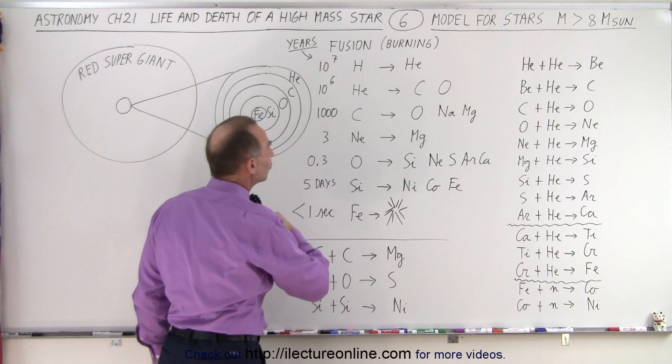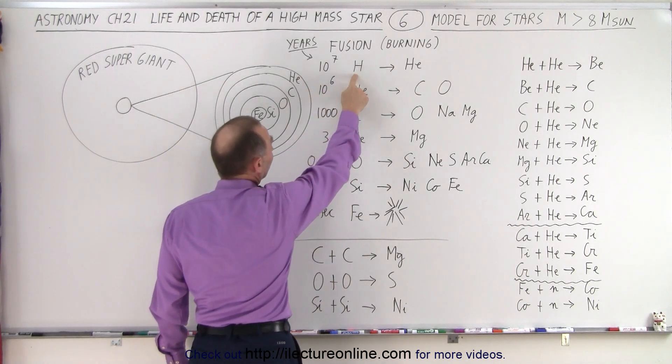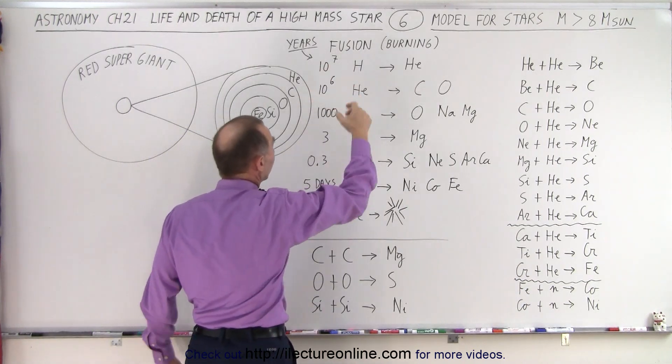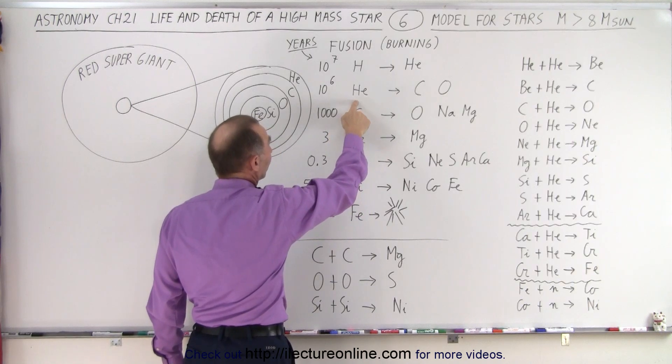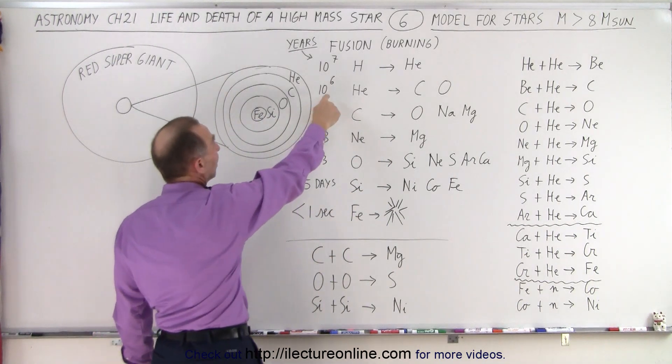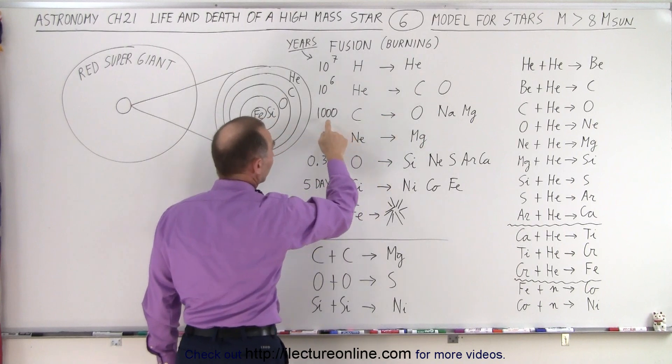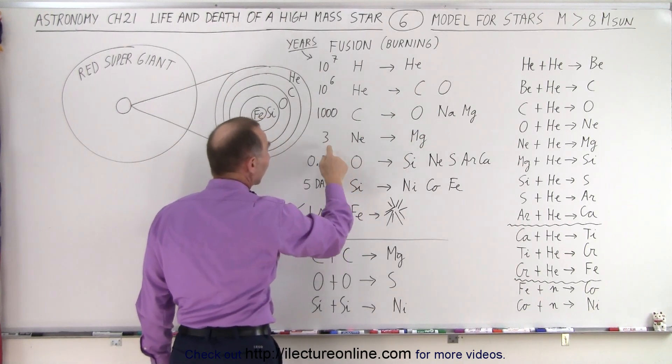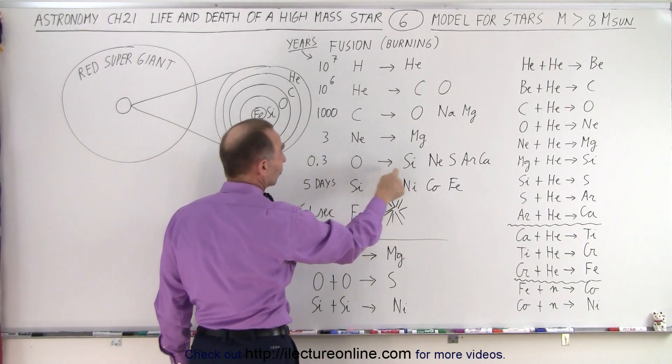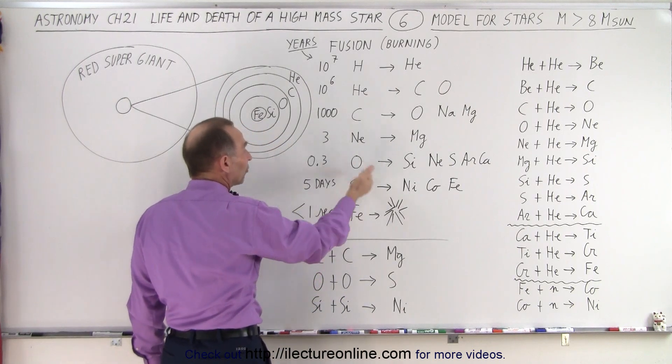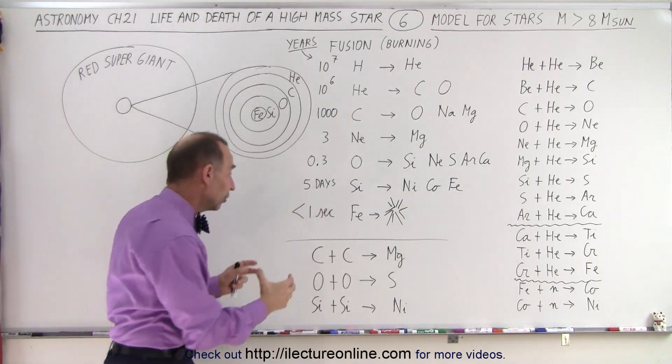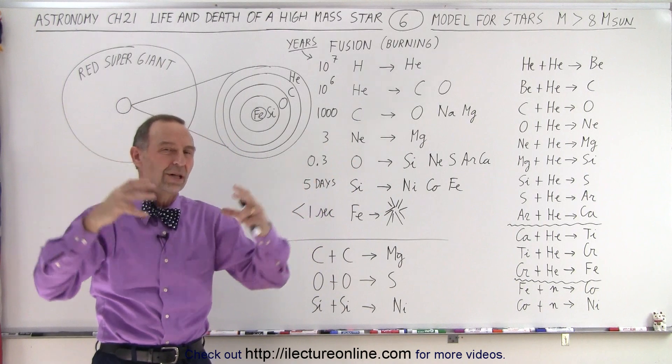So how much will these various stages take? Well, the typical stage for hydrogen to helium when it's a main sequence star, that takes about 10 million years for the very large stars. Then once we start converting helium into carbon, when the star is converted into a red giant or a red supergiant, notice it only takes about a million years to convert all the helium into carbon. It takes about a thousand years to convert the carbon into oxygen. It takes about three years to convert neon into magnesium. About a third of a year to convert oxygen into silicon. And only about five days to convert all the silicon in the core into nickel, which then converts to cobalt and iron. And once you have the core full of iron, it only takes a fraction of a second for the whole core to collapse.